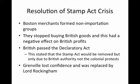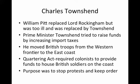Eventually, Prime Minister George Grenville lost confidence and was replaced by Lord Rockingham. William Pitt eventually replaced Lord Rockingham but was too ill, so he was then replaced by Charles Townsend. Prime Minister Townsend tried to raise funds by increasing import taxes. He moved the British troops from the western frontier to the east coast, and he established the Quartering Act, which required colonists to provide funds to house British soldiers on the coast. The purpose was to stop the protests and try to create order.